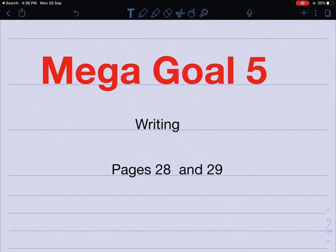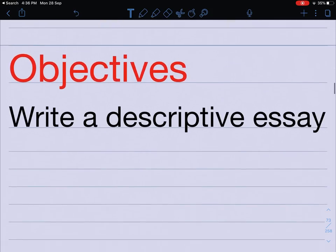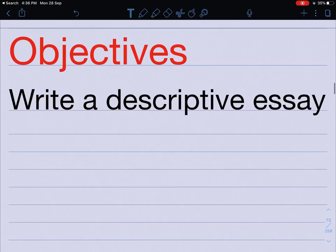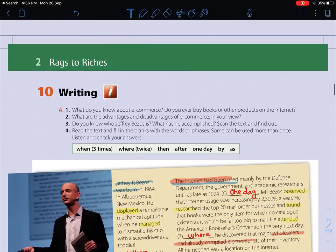Hello everybody, Mega Goal number five, third secondary, and this is the writing lesson for unit number two which is Rags to Riches, pages 28 and 29. Let's take a look at the objectives. In brief, we have to write a descriptive essay.